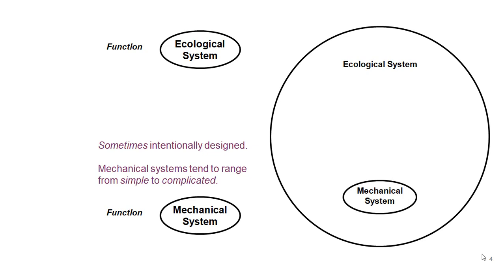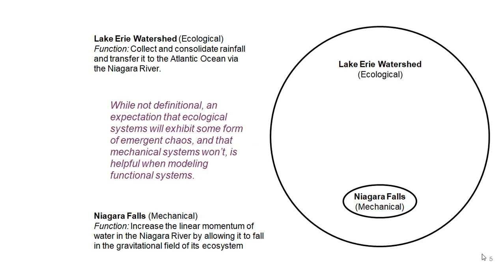As an example, the Lake Erie watershed in upstate New York and southern Canada collects rainfall and transfers it to the Atlantic Ocean via the Niagara River — that's an ecological system. Niagara Falls, on the other hand, is a mechanical system: it's a linear function that increases the linear momentum of water by allowing it to fall in a gravitational field. We don't ask why it does that — it simply accelerates water.